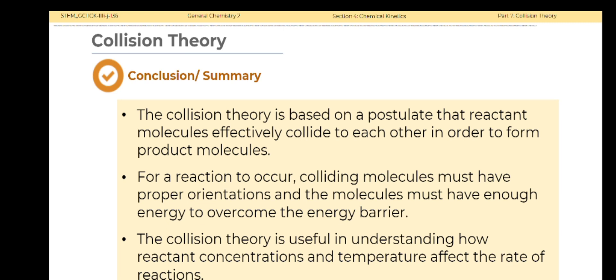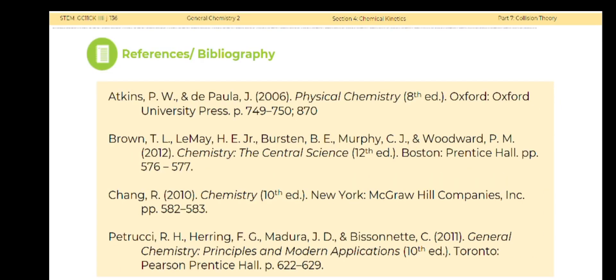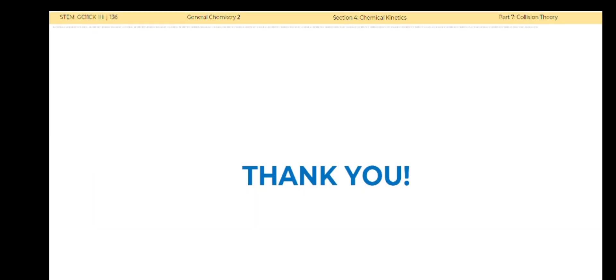To summarize, the collision theory is based on a postulate that reactant molecules effectively collide to each other in order to form product molecules. For a reaction to occur, colliding molecules must have proper orientations and the molecules must have enough energy to overcome the energy barrier. The collision theory is useful in understanding how reactant concentrations and temperature affect the rate of reaction. That's all. Thank you.